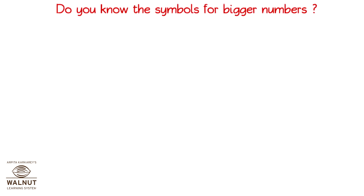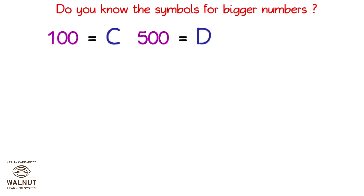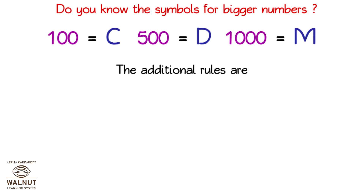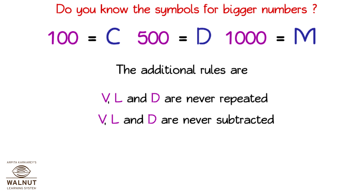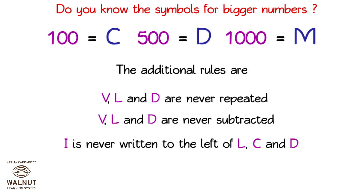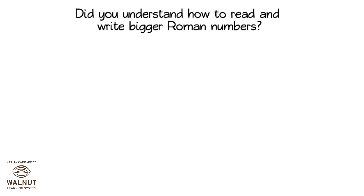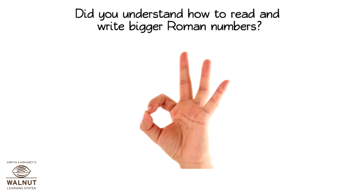Do you know the symbols for the bigger numbers? 100 is C, 500 is D and 1000 is M. The additional rules are: V, L and D are never repeated. V, L and D are never subtracted. I is never written to the left of L, C and D. Did you understand how to read and write bigger Roman numerals? Yes. Lovely.